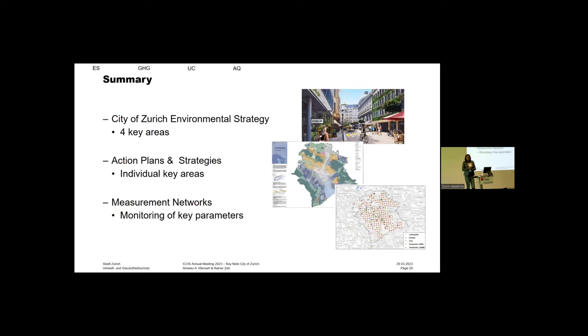The summary is that the city of Zurich has a holistic environmental strategy with four key areas, but they are intertwined and we work, all departments try to work together to get to a common goal. We have a lot of individual action plans and strategies for noise, for air quality, for greening, or for biodiversity. But we try to prove the success of our actions by having really good measurement networks or by collaborating with really good measurement networks. Thank you for your attention.